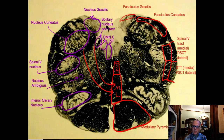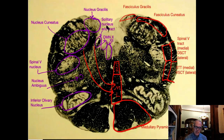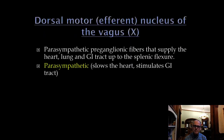Here is a labeled diagram showing all the structures we just talked about. Note that I'm not asking you to identify the spinothalamic tract, ventral or dorsal spinocerebellar tracts on the exam — they're there but not distinct enough to identify reliably in that location.